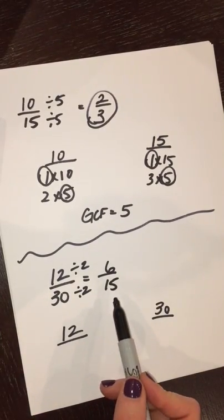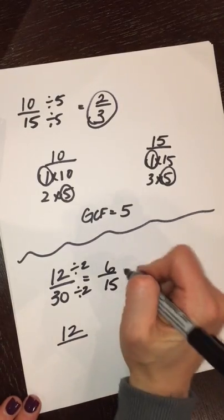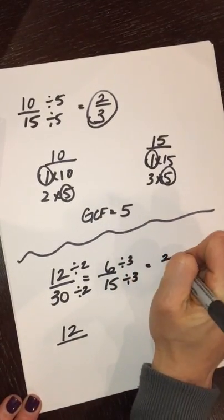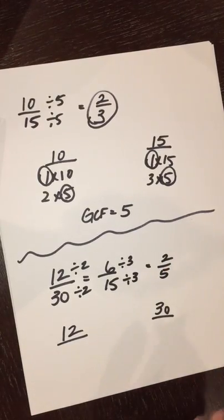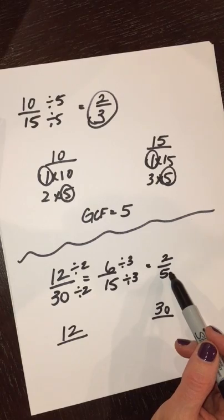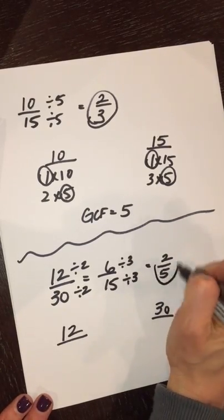Well, now when I look at that number, I know that three can go into both of those. So I keep dividing. And I get two-fifths. At this point, I don't see any common factor that could go into both two and five. So I'm done.